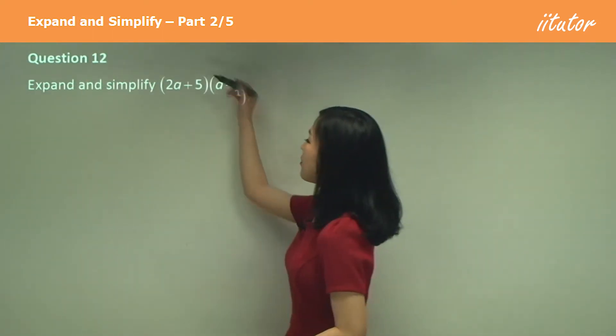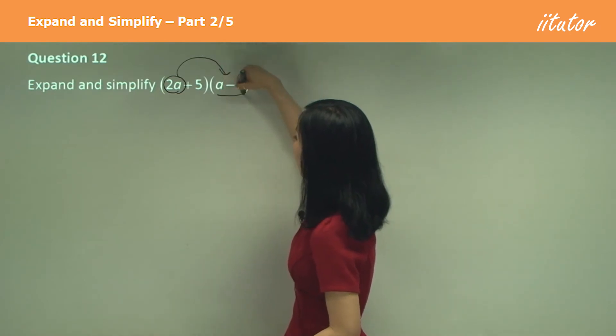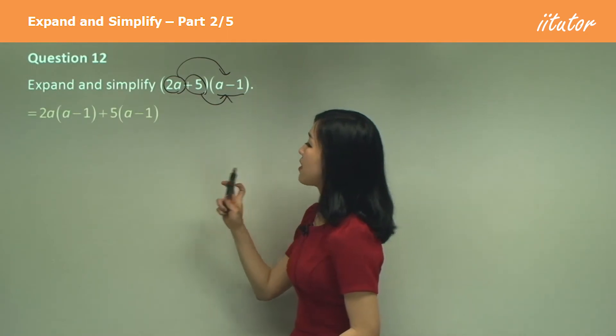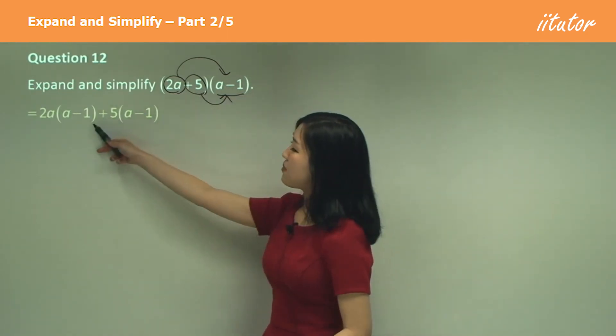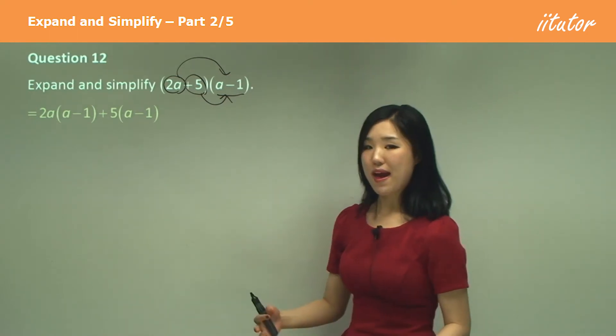So what I would do is multiply the two A with the big bracket and the five with the bracket. So if I separate it out, I get two A times A minus one plus five times A minus one and expand it out.